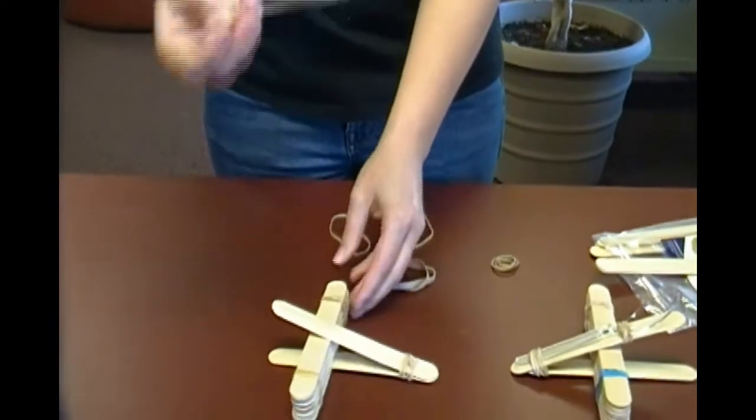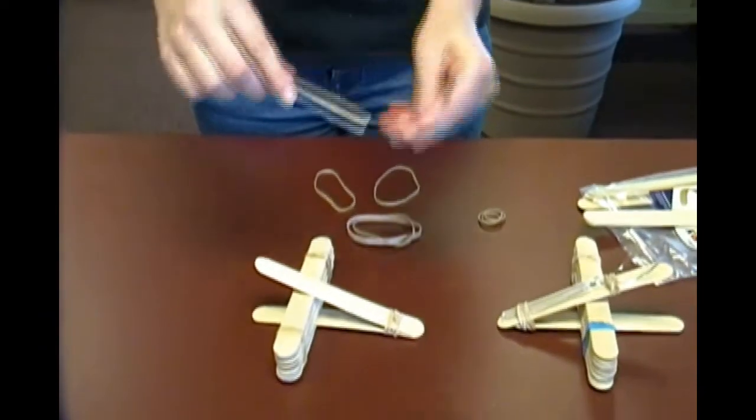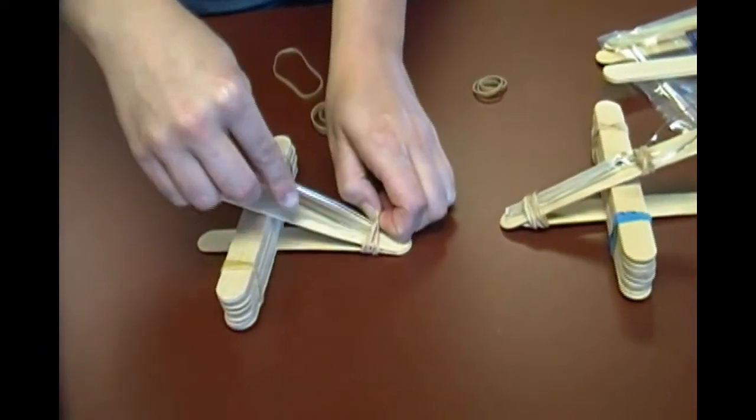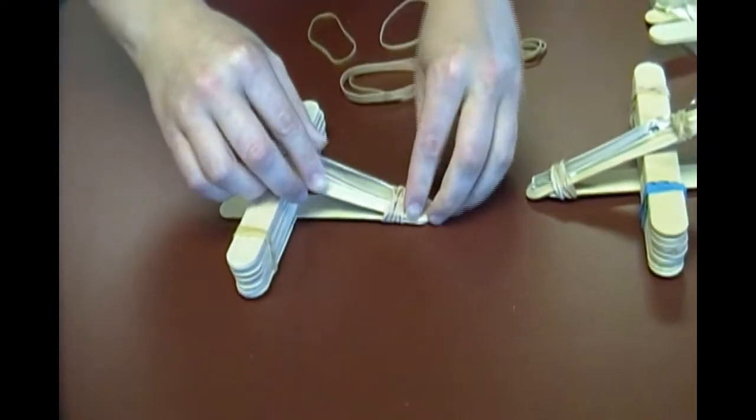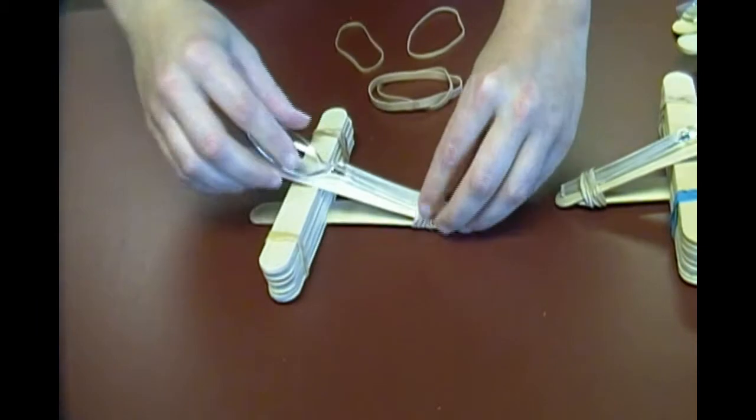And last, we've got our spoon, so we're just going to kind of wedge the spoon underneath the rubber band there so that it's on there too. There we go.